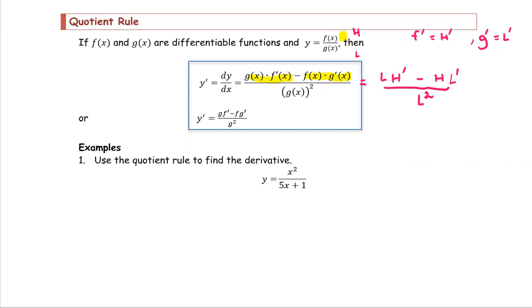In short notation, y prime equals g times f prime minus f times g prime, divided by g squared, where g is the denominator function.